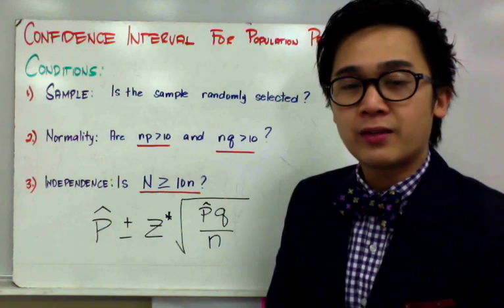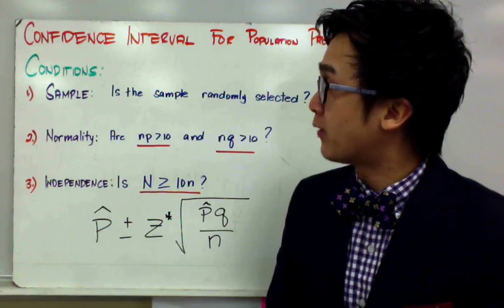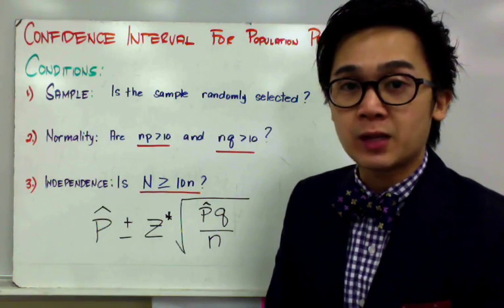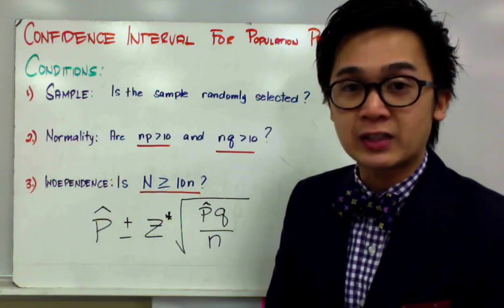Today we're going to compute the confidence interval for population proportion. For computing the confidence interval for population proportion, it's pretty much the same as the population mean. The major difference is the conditions that we need to satisfy.